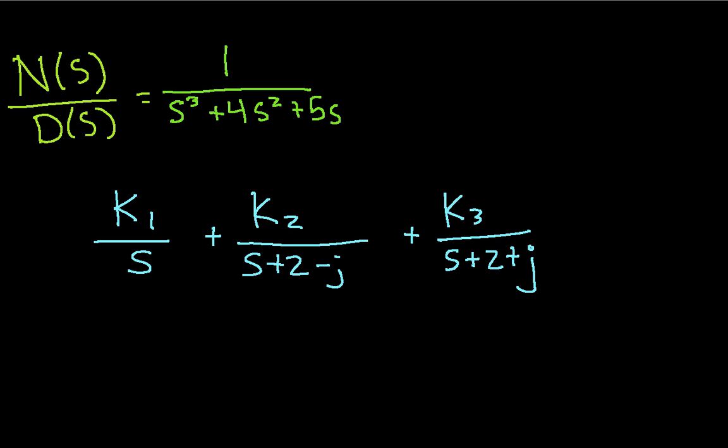In part one of this video, we introduced the idea that we can take the inverse Laplace transform of a ratio of two polynomials, so in this case we have a ratio of 1 in the numerator and this polynomial in the denominator, and we can break this ratio of polynomials into separate individual terms.